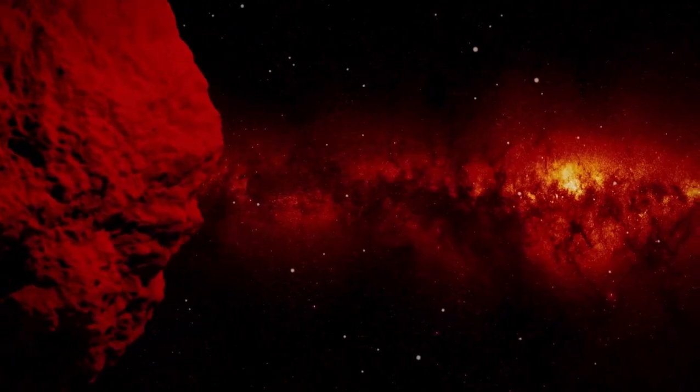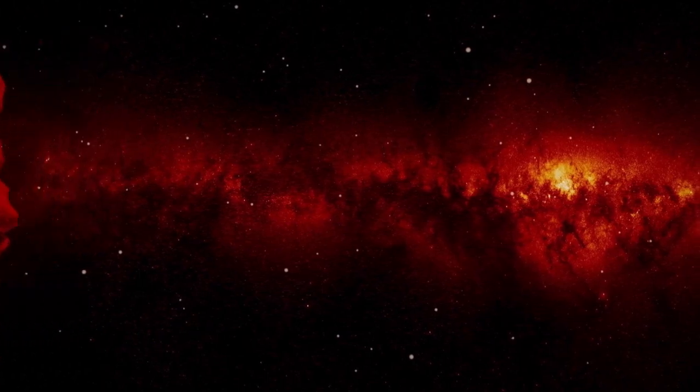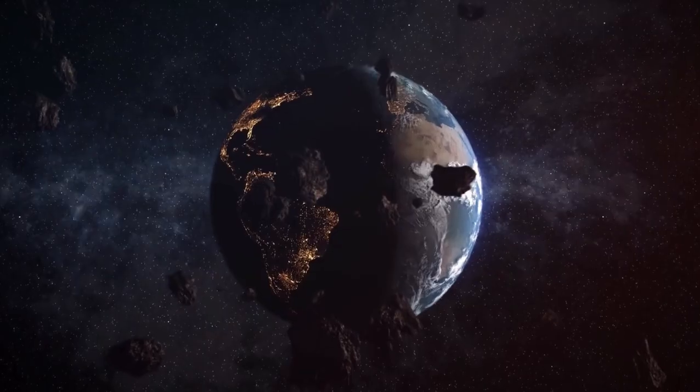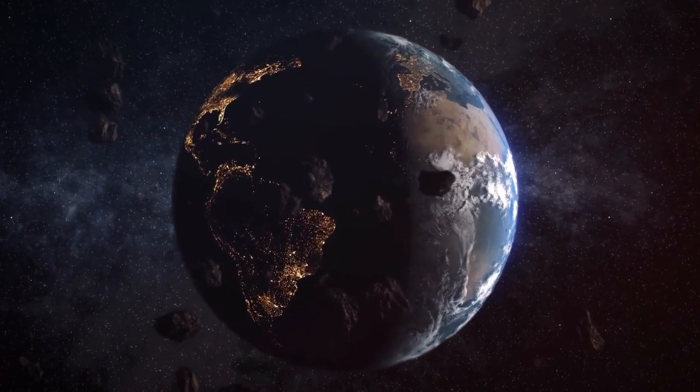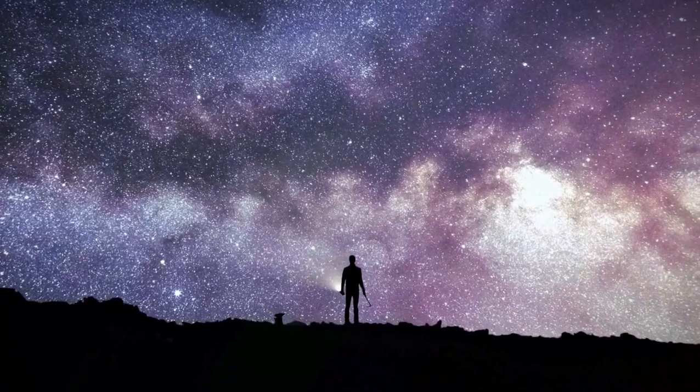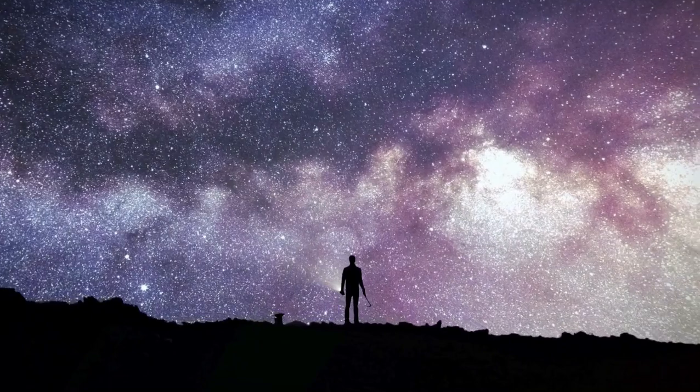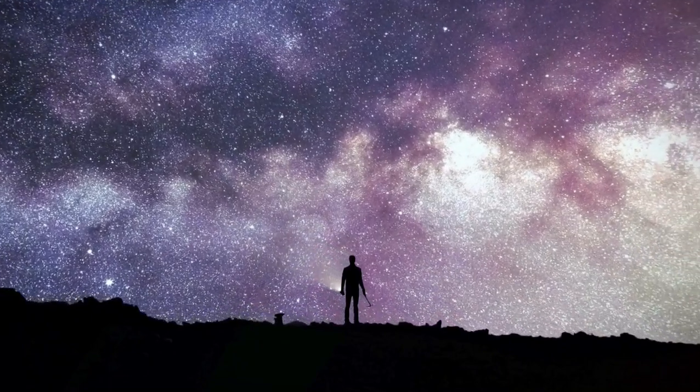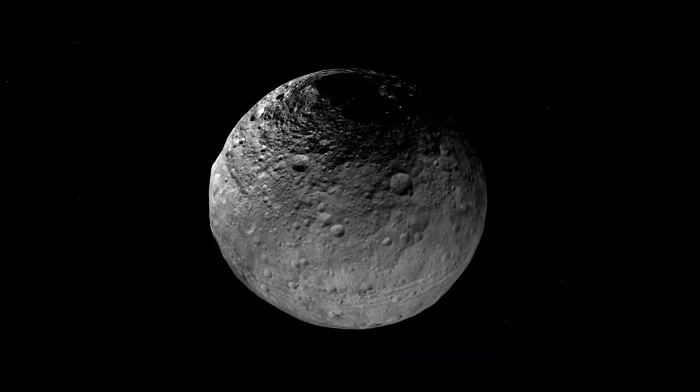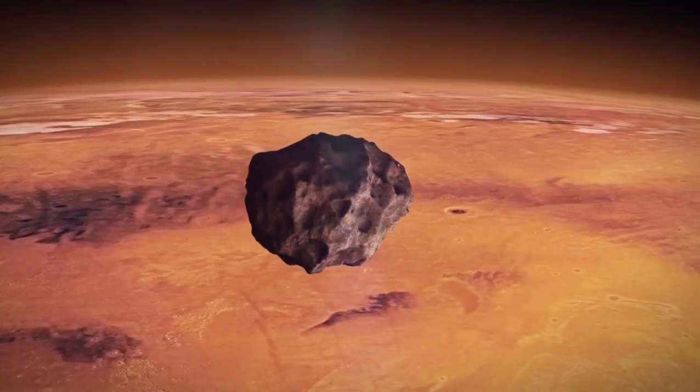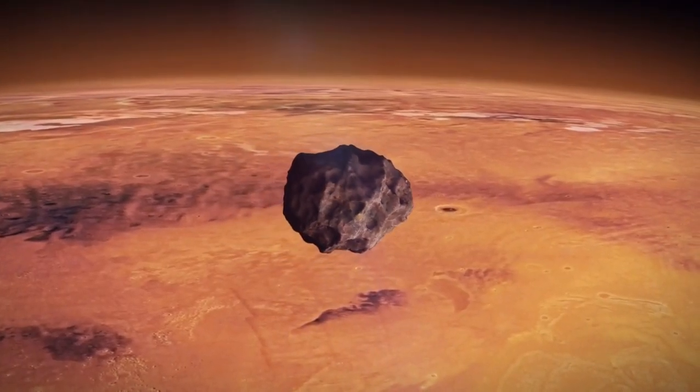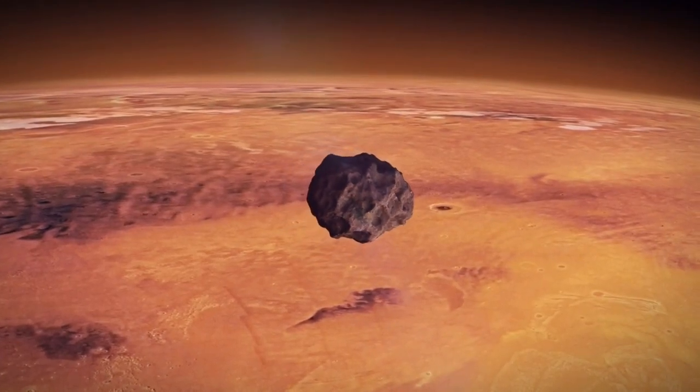If Oumuamua experienced nitrogen outgassing due to solar heating, it would have gained an additional reflective quality, indicated by an albedo of 0.64. To appear as faint as observed, Oumuamua would need to be smaller than initially estimated. According to calculations by Jackson and Desch, its dimensions would be approximately 148 by 144 by 25 feet if it were composed of nitrogen ice.